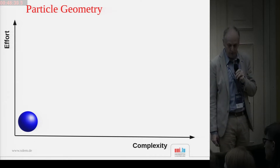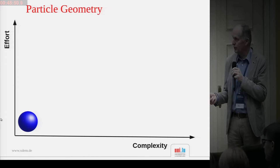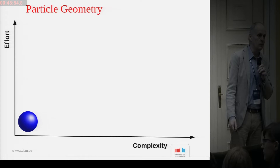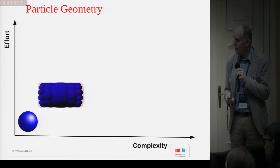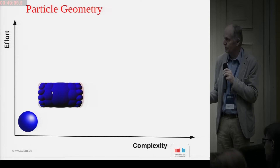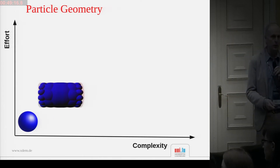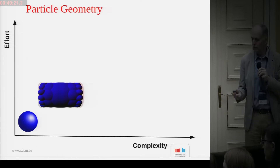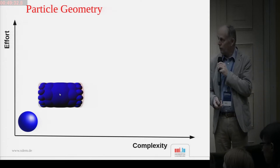Coming first to the particle geometry — the shape of the particles. The simplest particle shape is spherical, and you can deal with contact detection quite easily. If you go to higher geometries, for example a cylindrical shape, you can represent the cylindrical shape by filling it with spheres. The advantage of this approach is that you can still use your contact algorithm for neighbor detection, looping over all the particles and using the same contact algorithm.